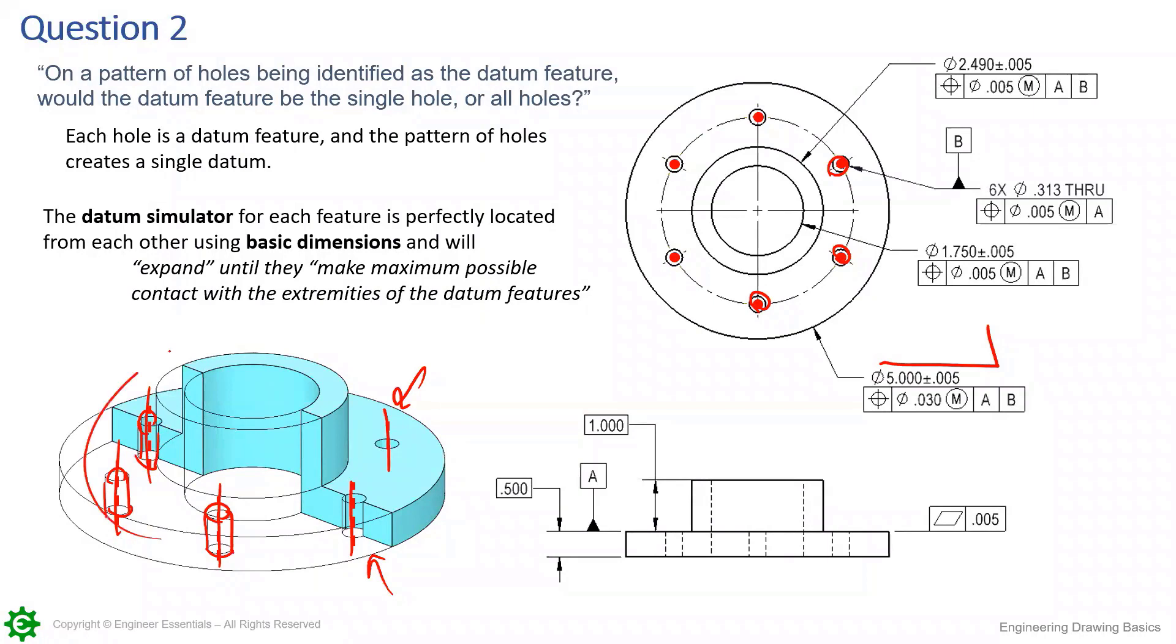It's going to capture simultaneously the irregularities and the high points of each one of these cylinders all the way around at the same time, so that you can picture this part kind of locking in. Keep in mind you got to stay connected to plane A first, but it's going to drop down on A and expand these little collets around each one of these holes and lock in. That's how it's going to assemble.